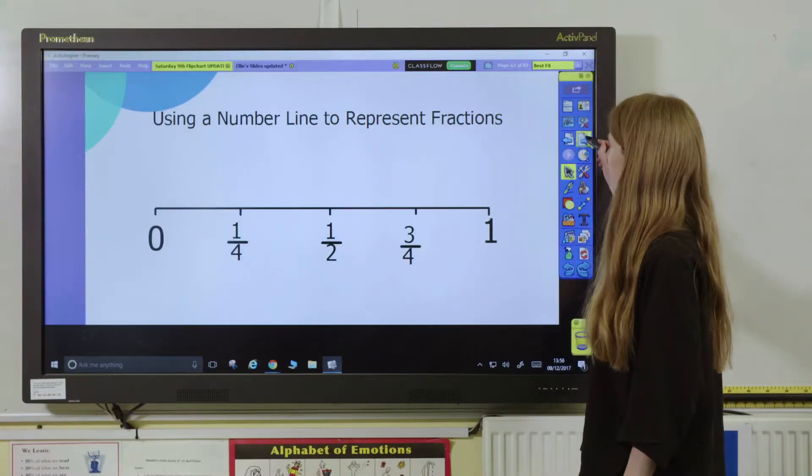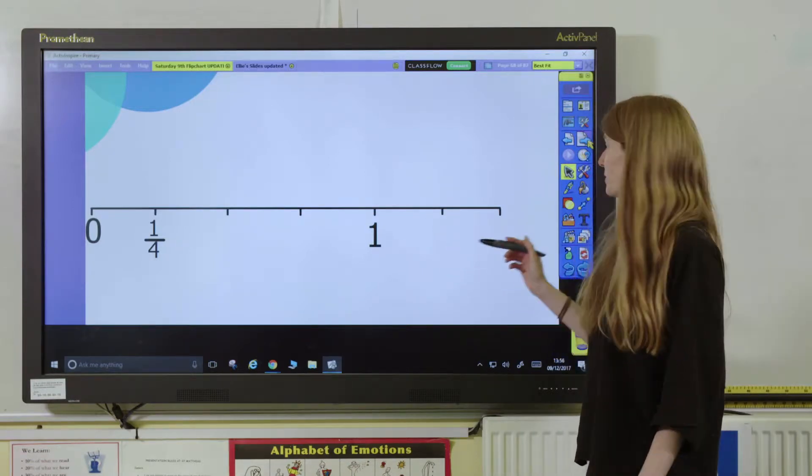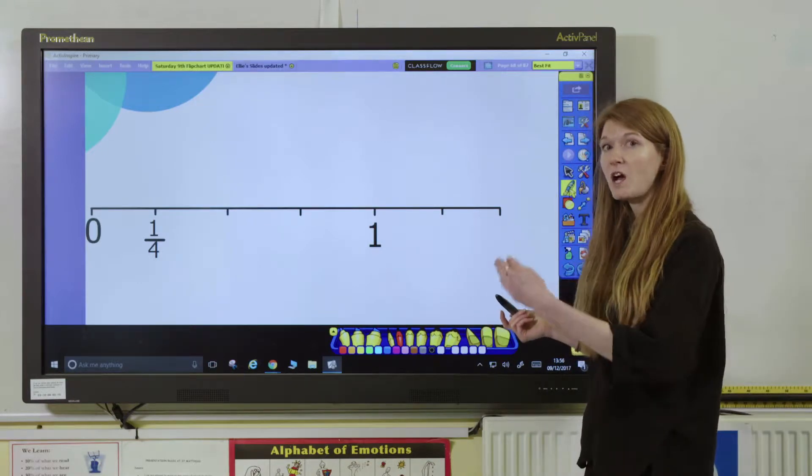We can also use number lines when pupils are counting in fractional steps. So in this example you might start at zero and ask them to count up in quarters.